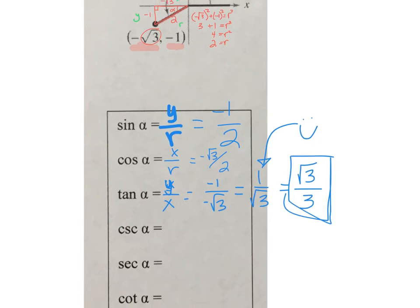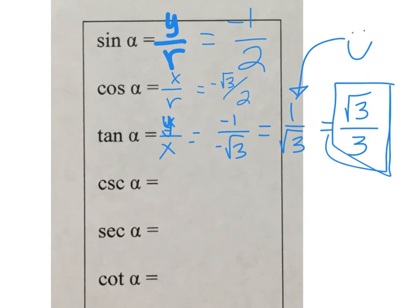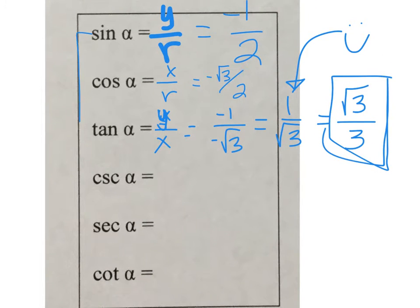Now the cosecant is the reciprocal of the sine, so that's r over the y, which is 2 over negative 1. So we have a cosecant value of negative 2.